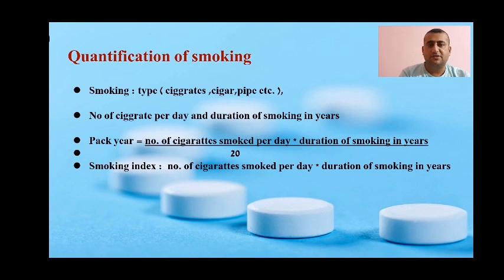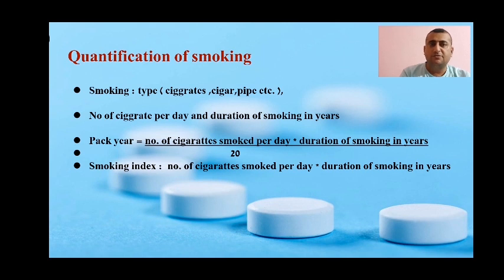You will often be asked about quantification of smoking. When taking smoking history, ask the type of smoking — cigarettes, cigar, or pipe — number of cigarettes per day, and duration of smoking in years. To calculate pack year: multiply number of cigarettes smoked per day by duration of smoking in years, then divide by 20. Without dividing by 20, you get the smoking index, which is simply cigarettes per day multiplied by years of smoking.